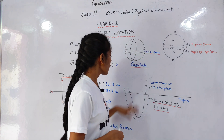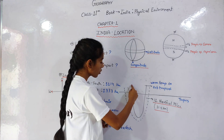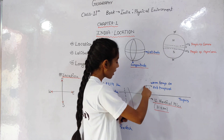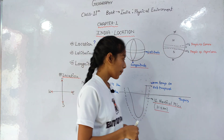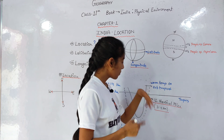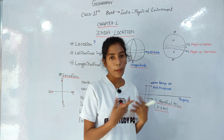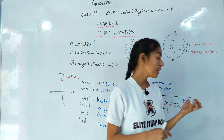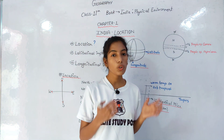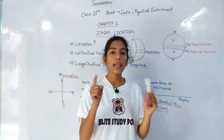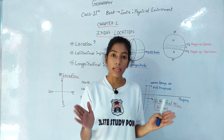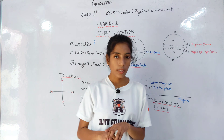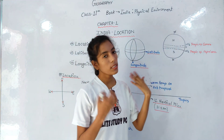If we look at the extent of India, we draw a line here because there is a whole ocean, and there is a term called nautical miles. How much is India's maritime extent? It is 12 nautical miles. India's region extends 12 nautical miles outside its coast. If we convert it into kilometers, this is 21.9 kilometers.